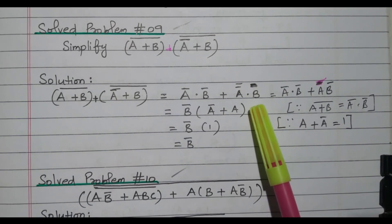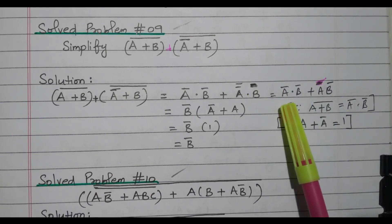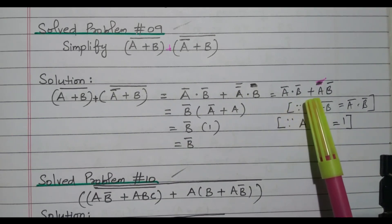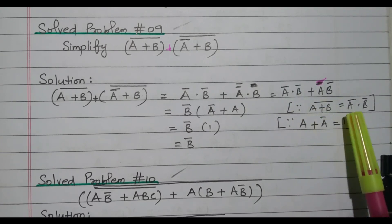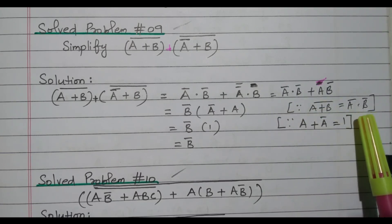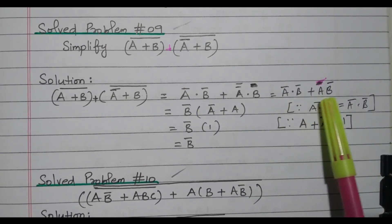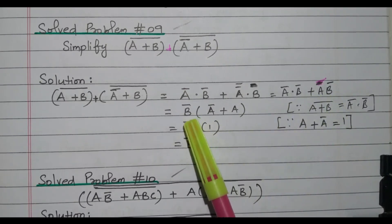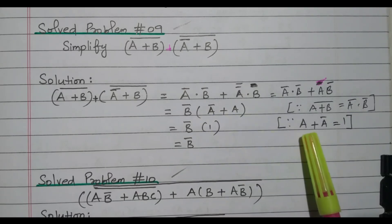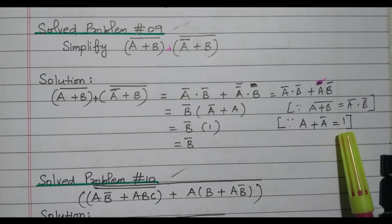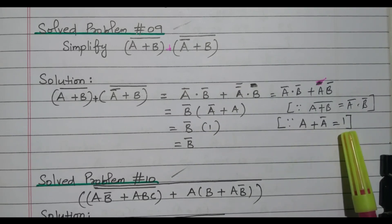A-double-bar becomes A, so we get A-bar dot B-bar plus A dot B-bar. We applied the theorem A plus B the whole bar equals A-bar dot B-bar. Now B-bar is available commonly in both terms. We can take B-bar outside, giving B-bar times A-bar plus A. A-bar plus A is nothing but 1.